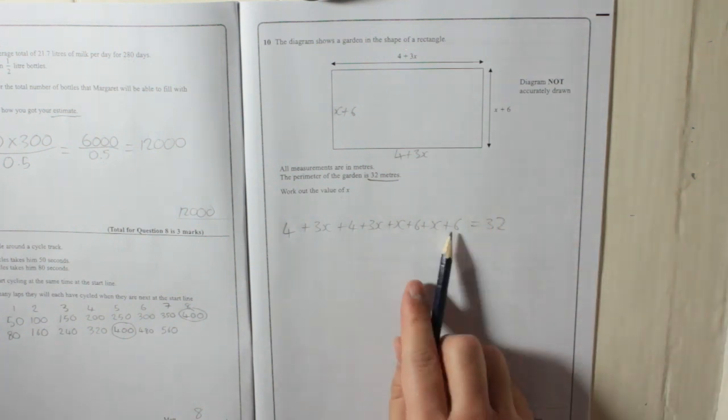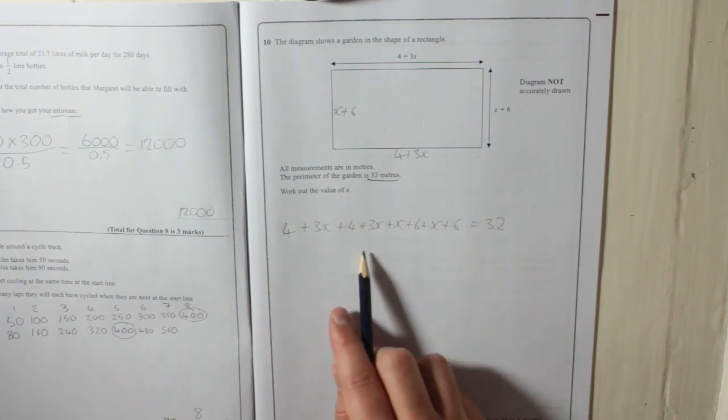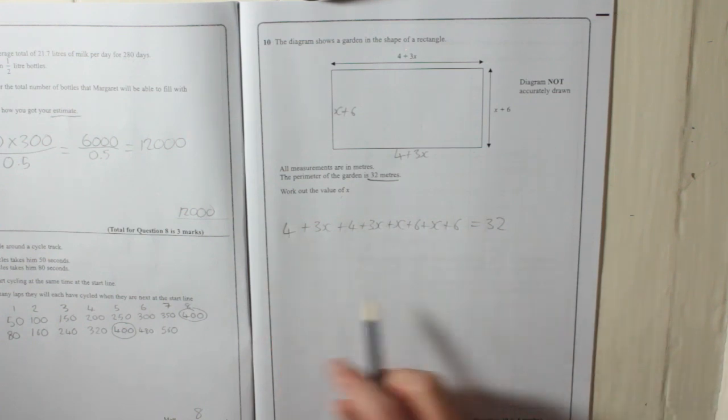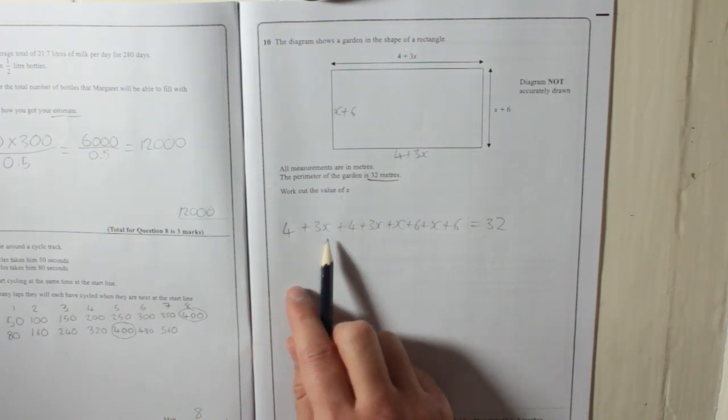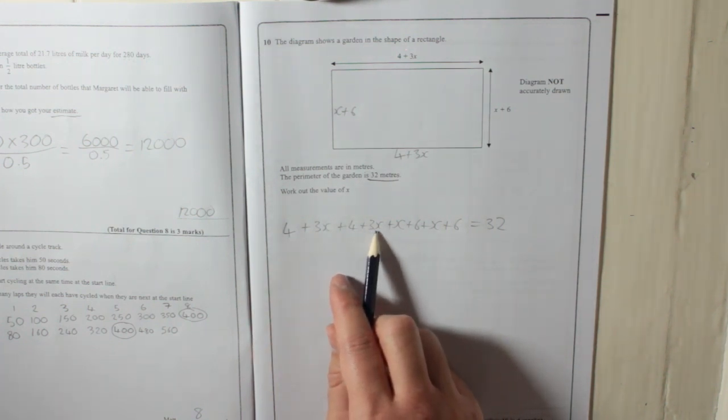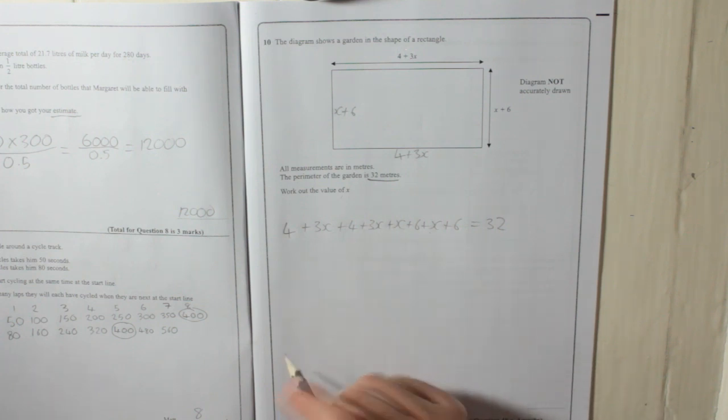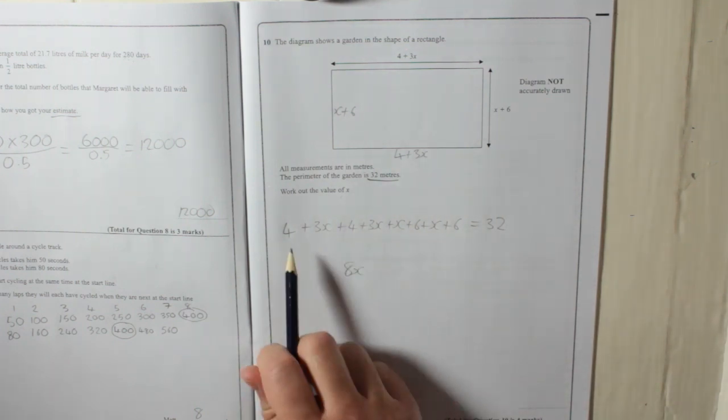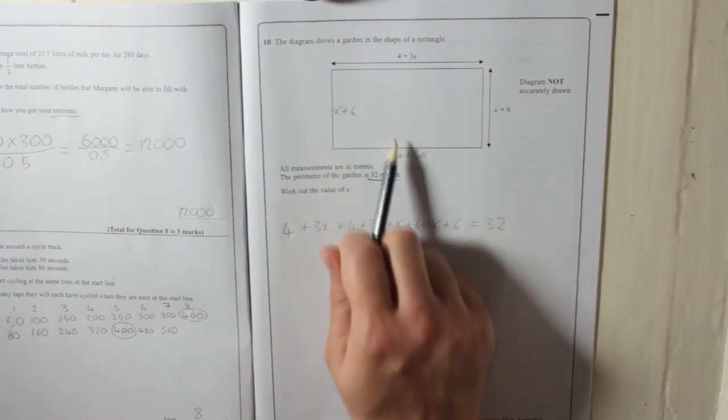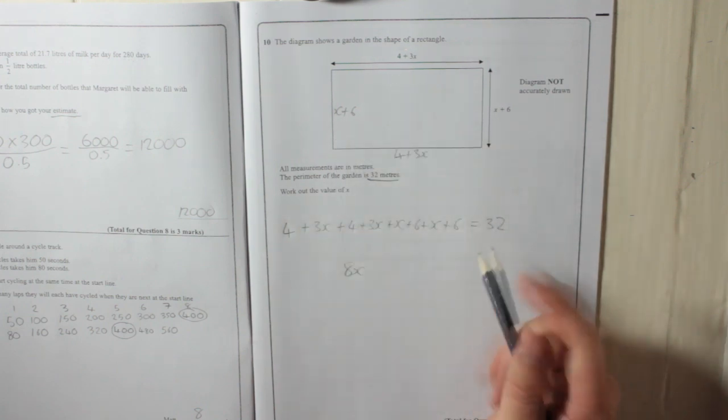What I'm going to do, I'm going to gather all the like terms together, all the x's and all the numbers, and then solve the equation that we get. Be careful, it's easy to make a mistake here. Let's look at the x's first. You've got 3x, another 3x, that's 6x, plus another x, plus another x, that's 8x. The numbers that are on their own, you've got 4 plus 4 plus 6 plus 6, which is 20.